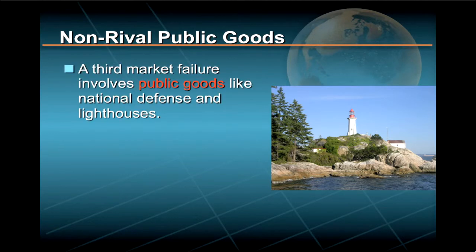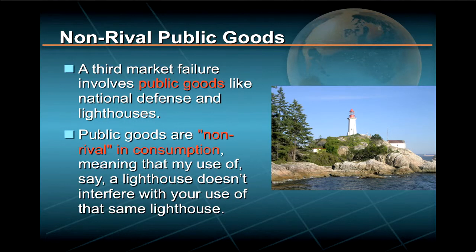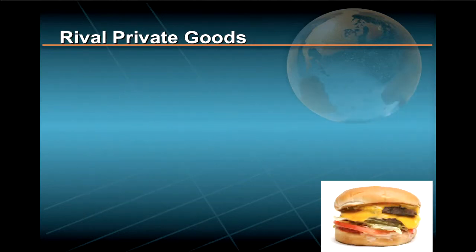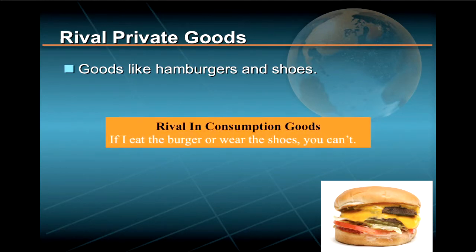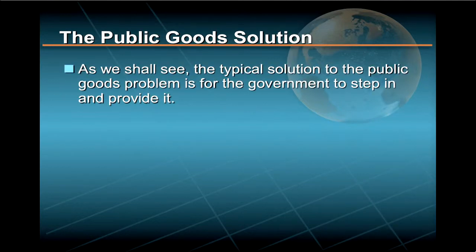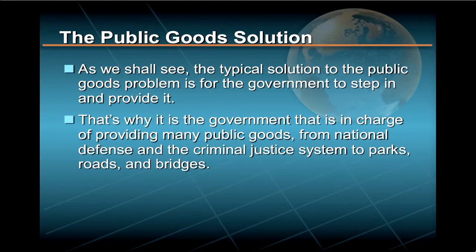A third market failure involves so-called public goods, like national defense and lighthouses. The problem with public goods is that they are non-rival in consumption, meaning that my use of, say, a lighthouse doesn't interfere with your use of that same lighthouse. This is very different from goods that are rival in consumption, like hamburgers and shoes — if I eat the burger or wear the shoes, you can't. The typical solution to the public goods problem is for the government to step in and provide it. That's why it is the government that is in charge of providing many public goods, from national defense and the criminal justice system to parks, roads, and bridges.